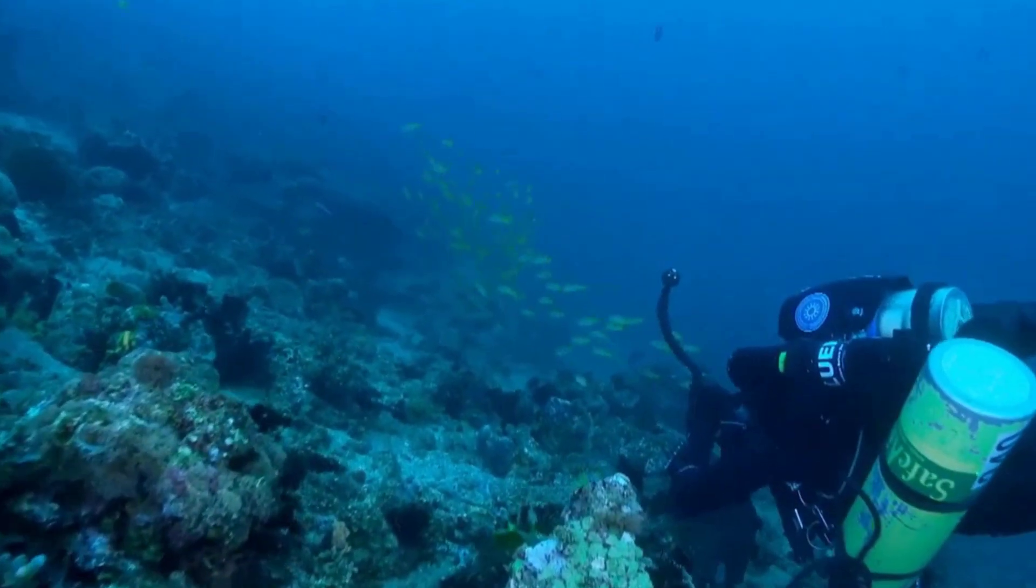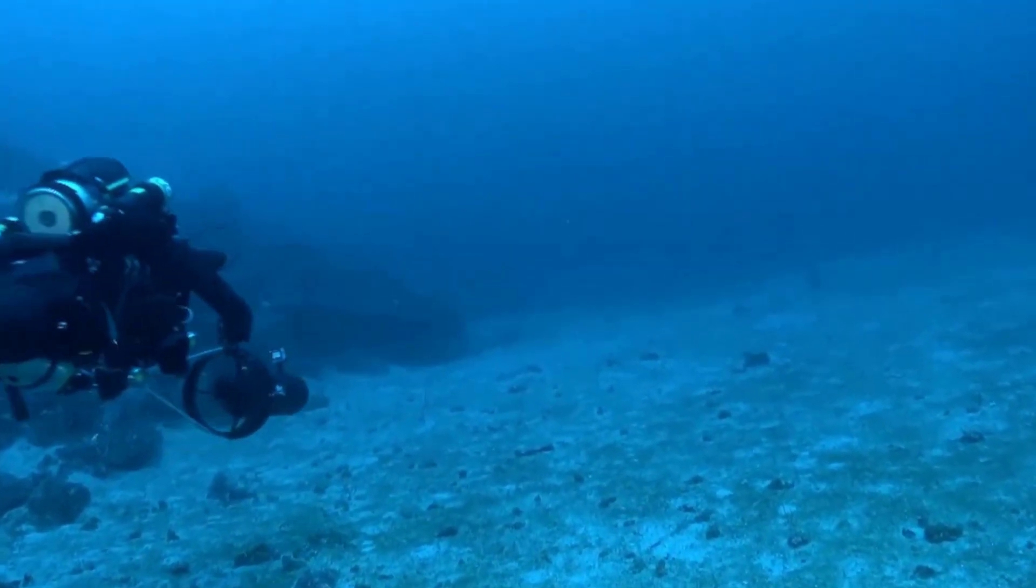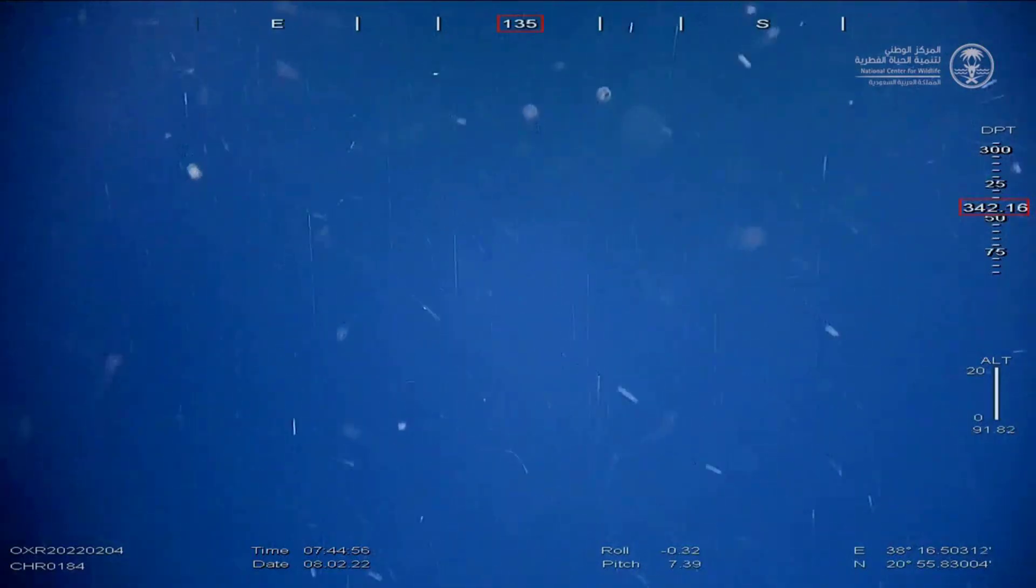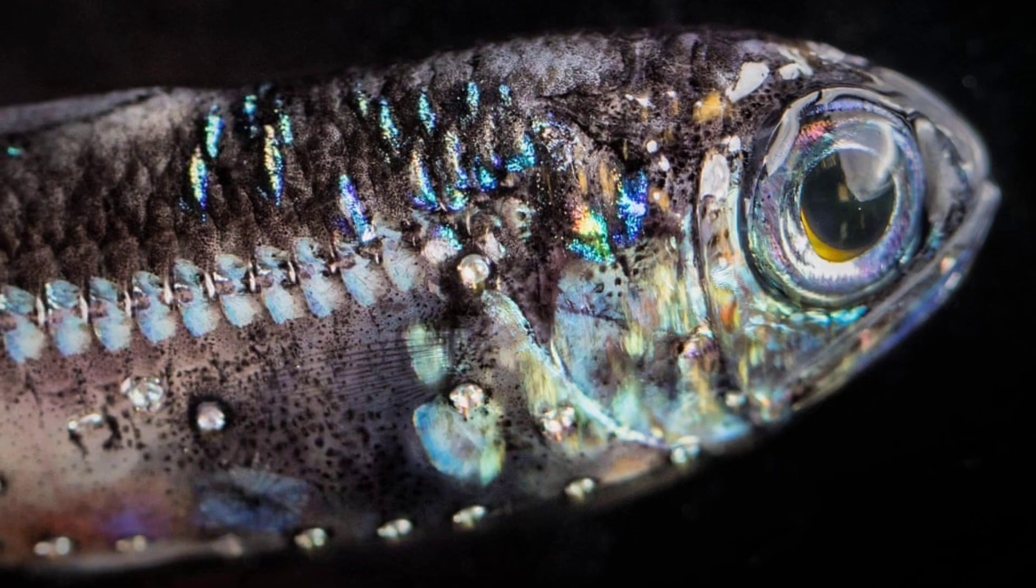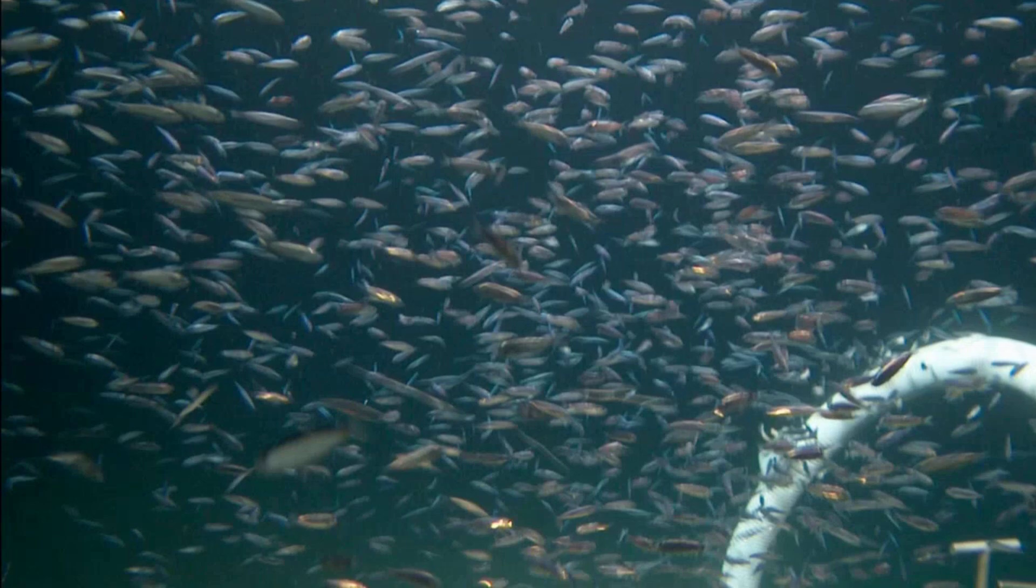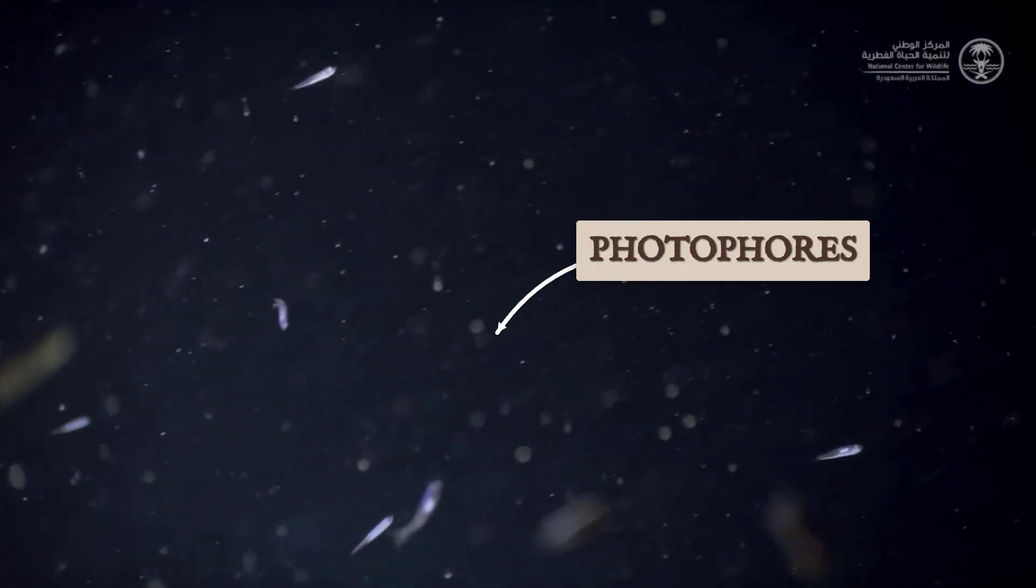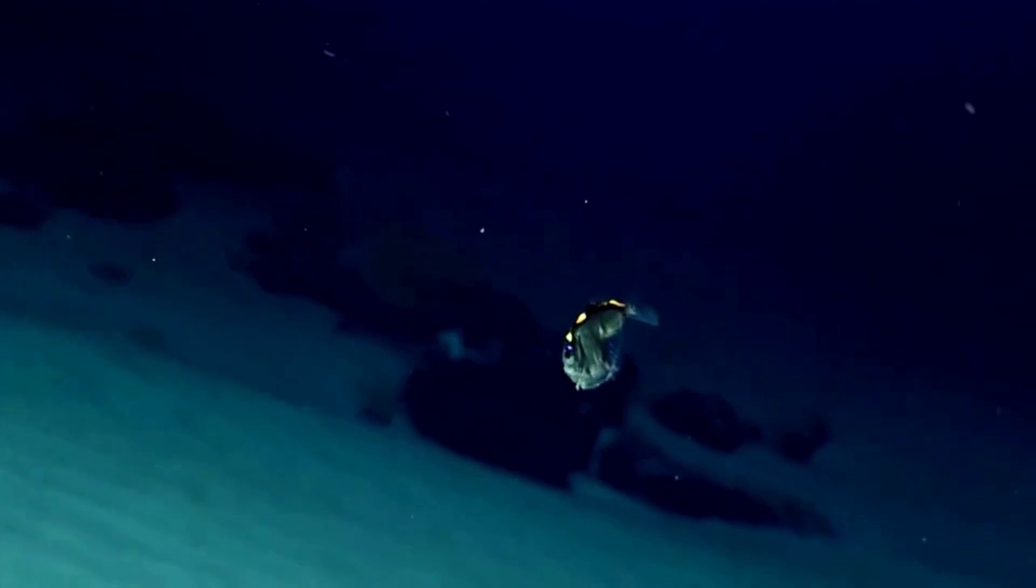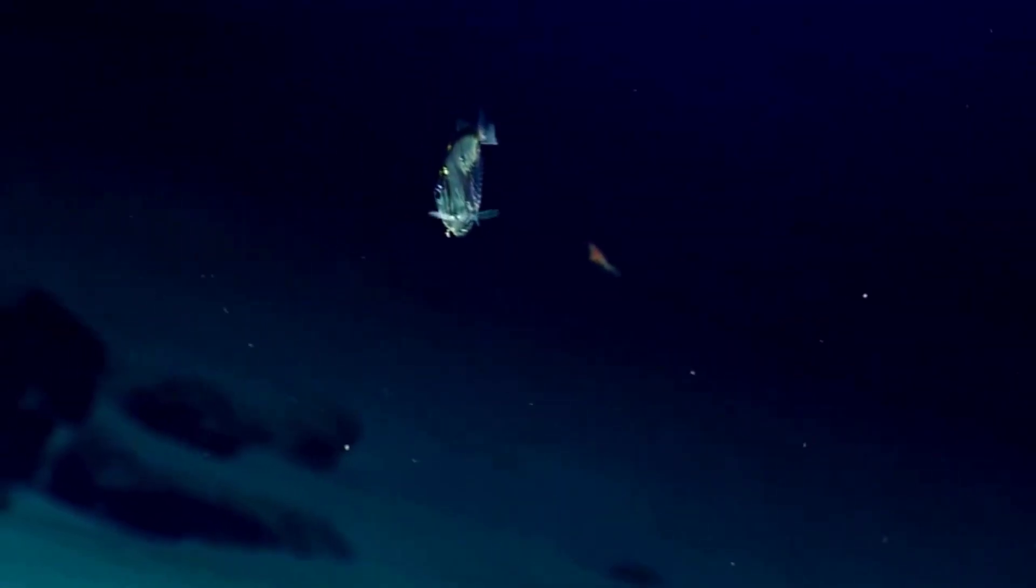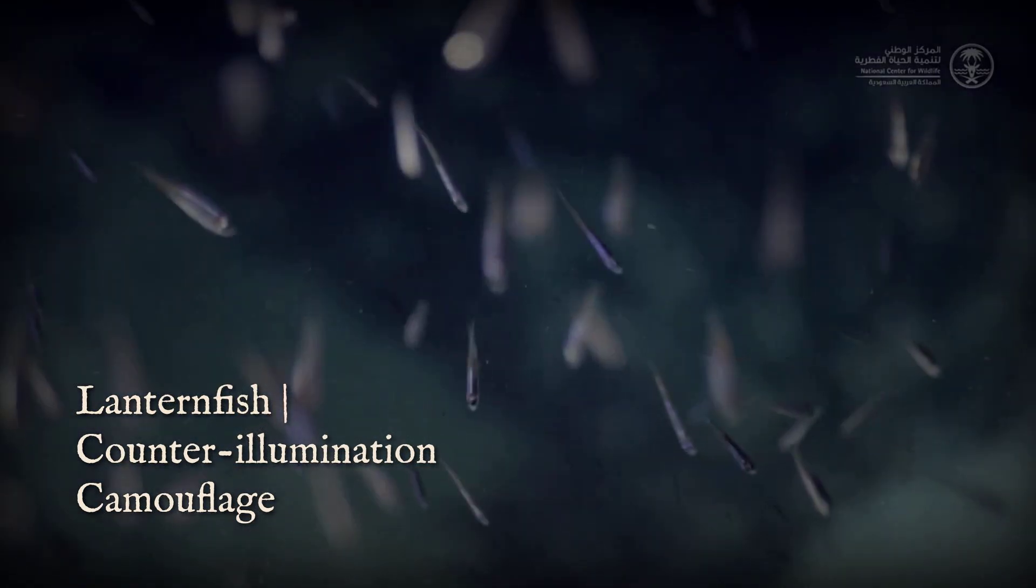At 200 meters, the last rays of sunlight fade, giving way to the twilight zone. Here, lanternfish drift in schools, each carrying rows of photophores along their bellies and flanks. When a predator approaches from below, these tiny lights flicker on, matching the faint glow from above. In an instant, the lanternfish erases its own shadow, vanishing into the background. This is counter-illumination, a living cloak of invisibility.